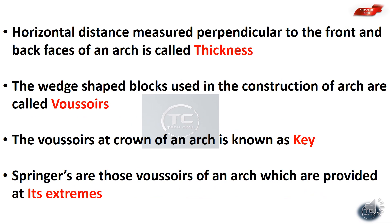The horizontal distance measured perpendicular to the front and back faces of an arch is called thickness. The vertical distance from the springing line to the crown is called the depth of an arch.